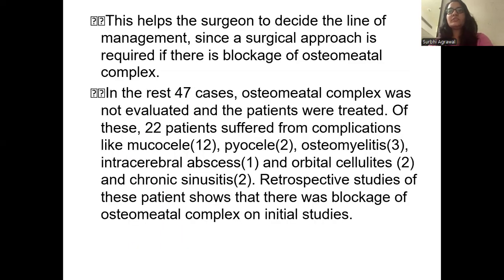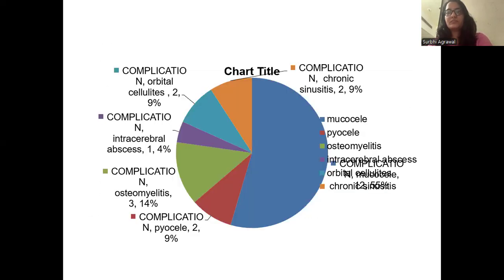This helps the surgeon decide the line of management, since a surgical approach is required if there is a blockage of the osteomeatal complex. In the remaining 47 cases, the osteomeatal complex was not evaluated and the patients were treated conservatively. Of these, 22 patients suffered from complications like mucocele, pyocele, osteomyelitis, intracerebral abscess, orbital cellulitis, and chronic sinusitis. Retrospective studies of these patients showed blockage of the OMC on the initial studies. This is a chart showing the percentage breakdown of complications.